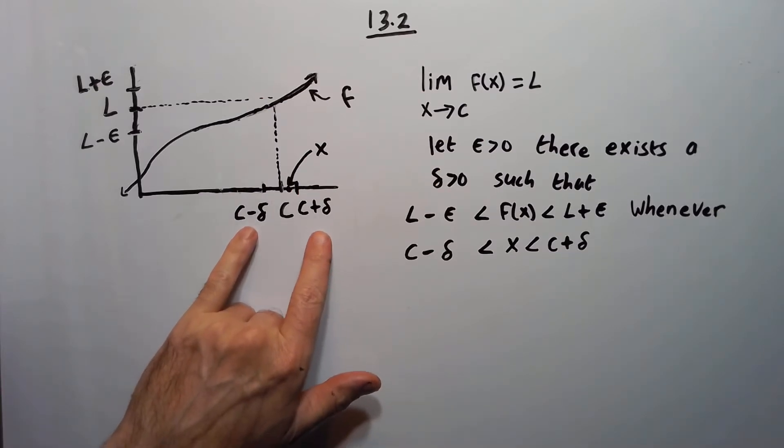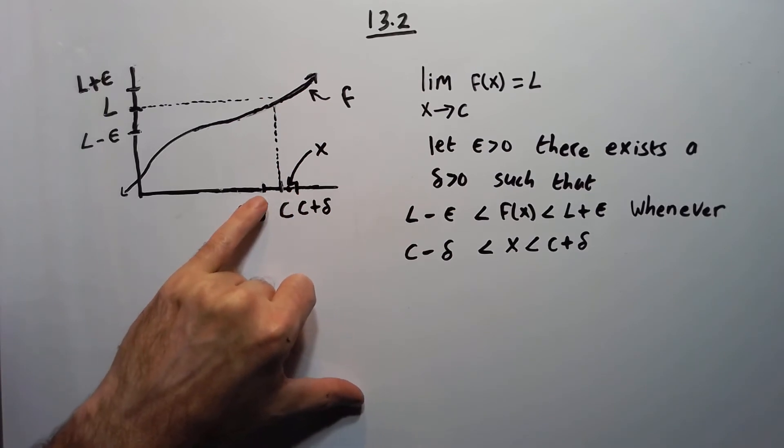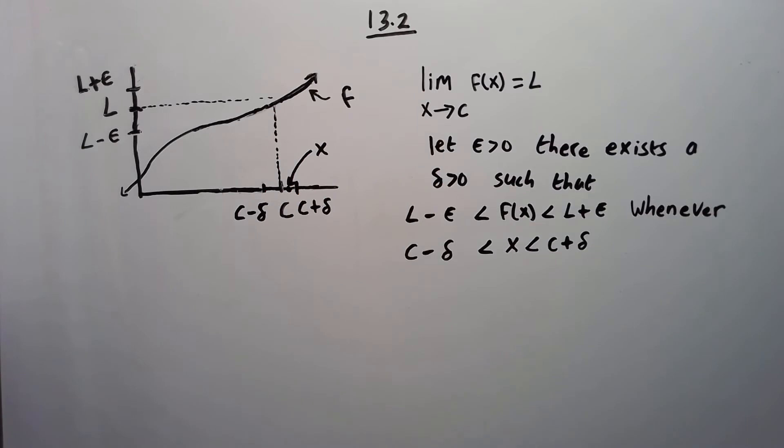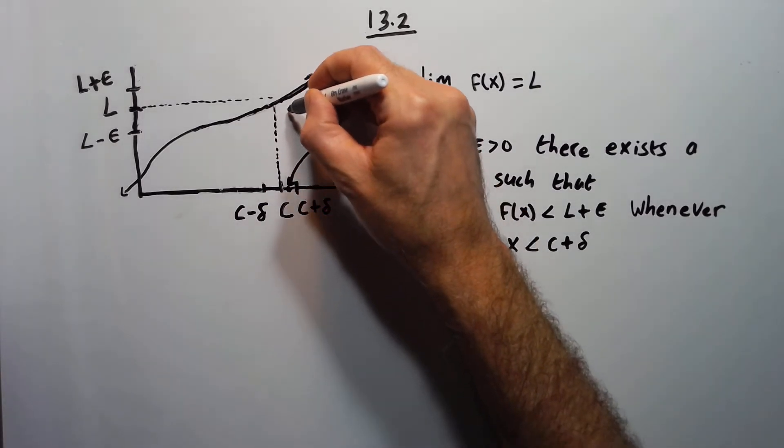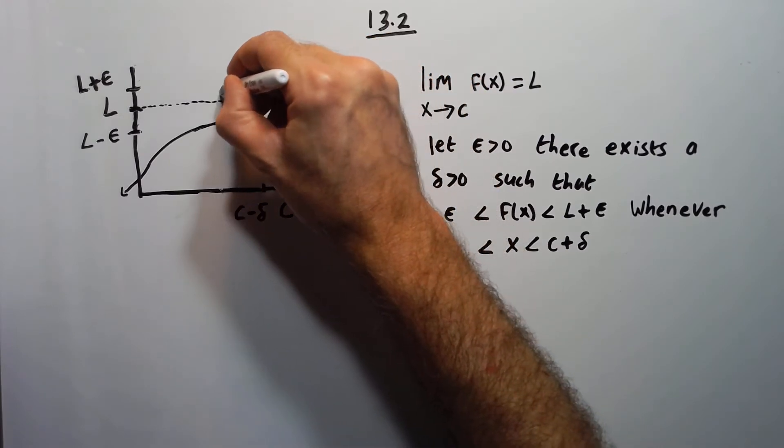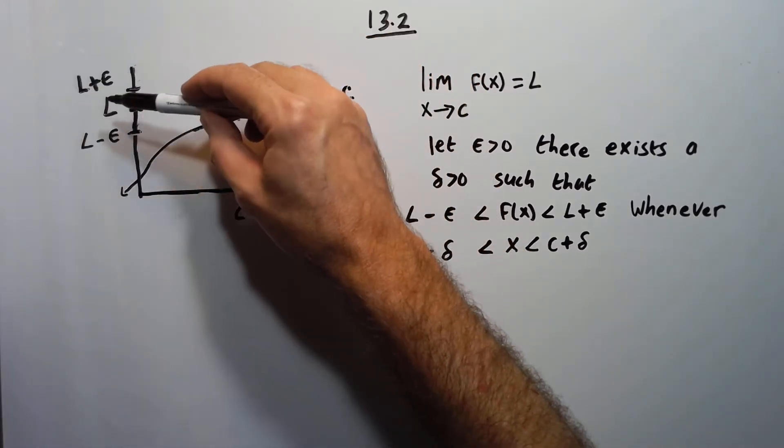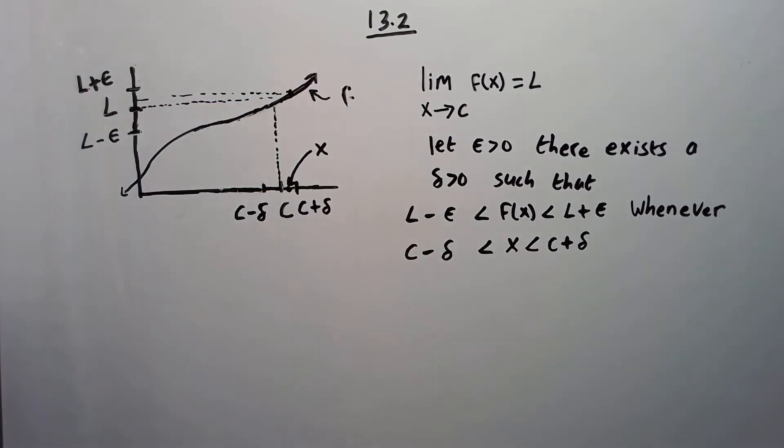It's basically saying I can find an interval around C. So it would be C plus delta, C minus delta such that any x value in this interval, when you map it under f, so say I took this x value, map it under f, we go to that. And that guy there is in the interval L plus epsilon, L minus epsilon. So this is the epsilon-delta definition of a limit here.